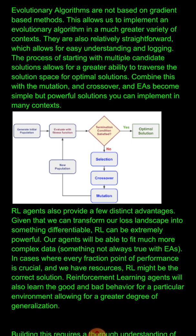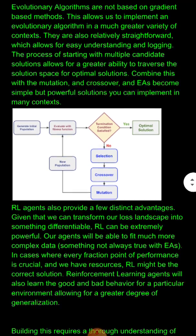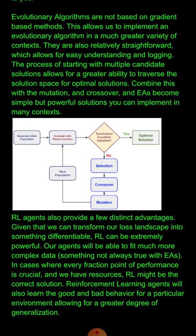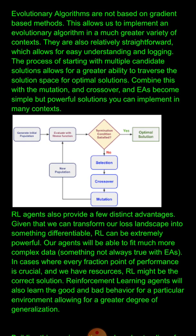RL agents also learn both the good and the bad, instead of just learning the good. For example, in a video game, an evolutionary algorithm's final solution will only know what to do in a given state to get the highest score, while an RL method will know both the highest and the lowest point states. In cases where both are important for making trade-off decisions, reinforcement learning can be crucial.